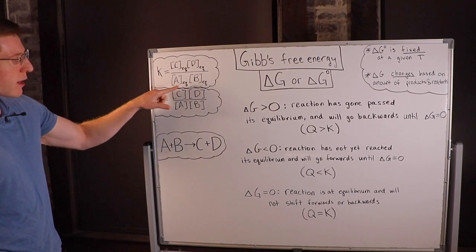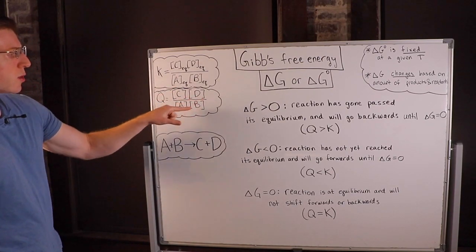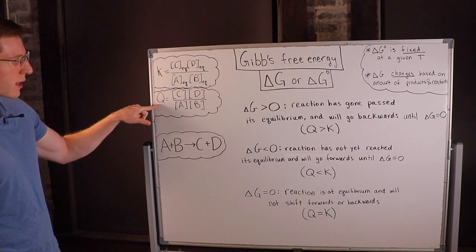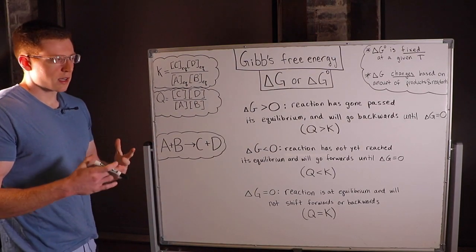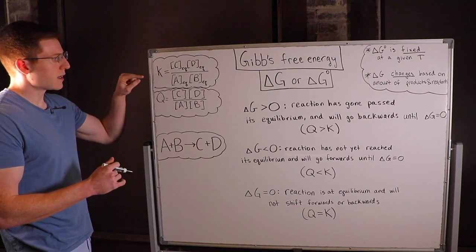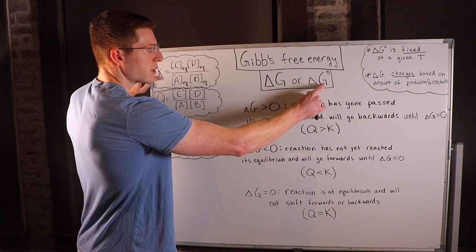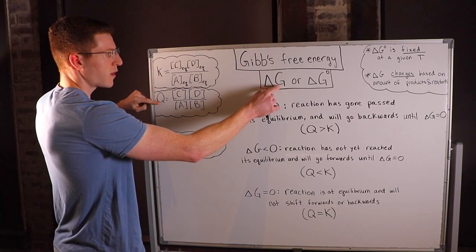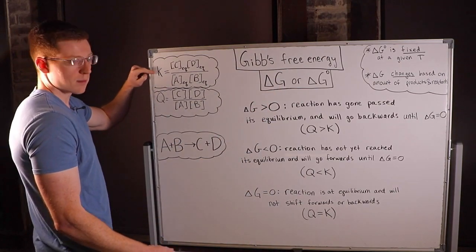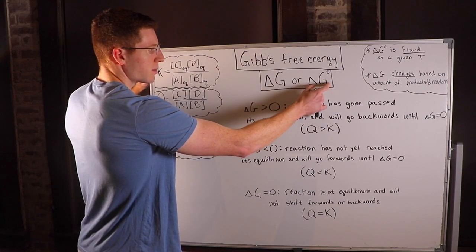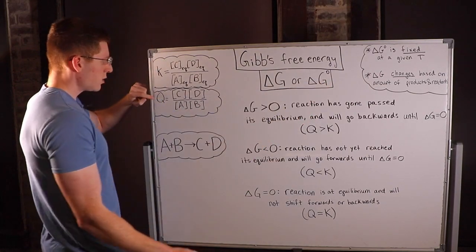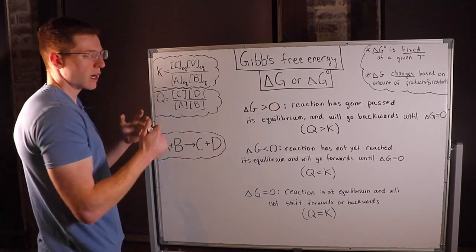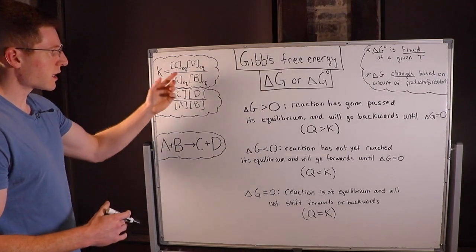Q, on the other hand — notice the subscript EQ is left off each of the concentrations — implies that Q is not necessarily at equilibrium. You can draw the analogy that K corresponds to delta G°, as Q corresponds to the more flexible delta G. K is at equilibrium, and Q is not necessarily at equilibrium, just like the flexible delta G.